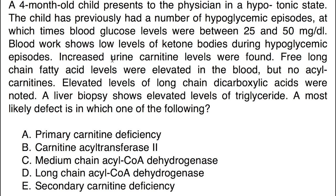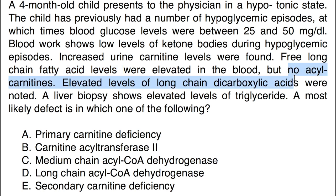The key points from this case are: non-ketotic or hypoketotic hypoglycemia — hypoglycemia with low ketone bodies. Whenever we see hypoketotic hypoglycemia, we think about two things: a defect in the carnitine shuttle mechanism or a defect in beta-oxidation. Either of these could lead to hypoketotic hypoglycemia. Also, urinary carnitine levels are elevated, and long-chain fatty acids are elevated in the blood with no acyl-carnitins elevated.